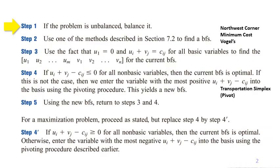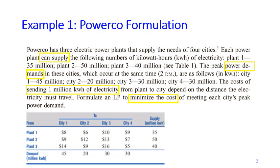Let's start from step one, balancing the problem. If this is the example, the Powerco formulation, we see that this problem is already balanced. The total number of supply is exactly the same with the total number of demand. If it's not the case, then you need to add either dummy demand or dummy supply point.